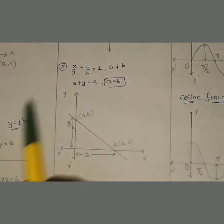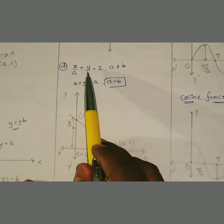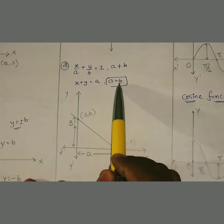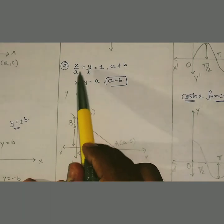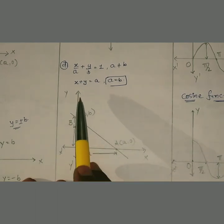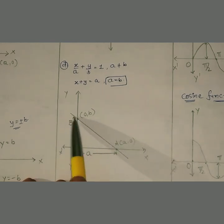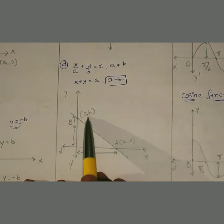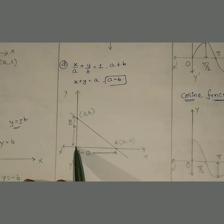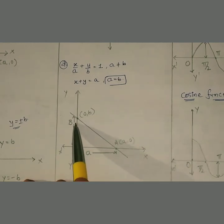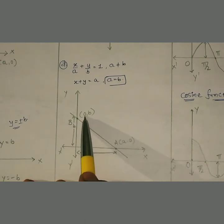Fourth characteristic of straight line: x/a + y/b = 1, where a ≠ b। Second form: x + y = a, where a = b। This is a decreasing graph because the slope is negative। Starting from point (a, 0) on the x-axis and point (0, b) on the y-axis — distance from origin on x-axis is 'a', distance from origin on y-axis is 'b'।